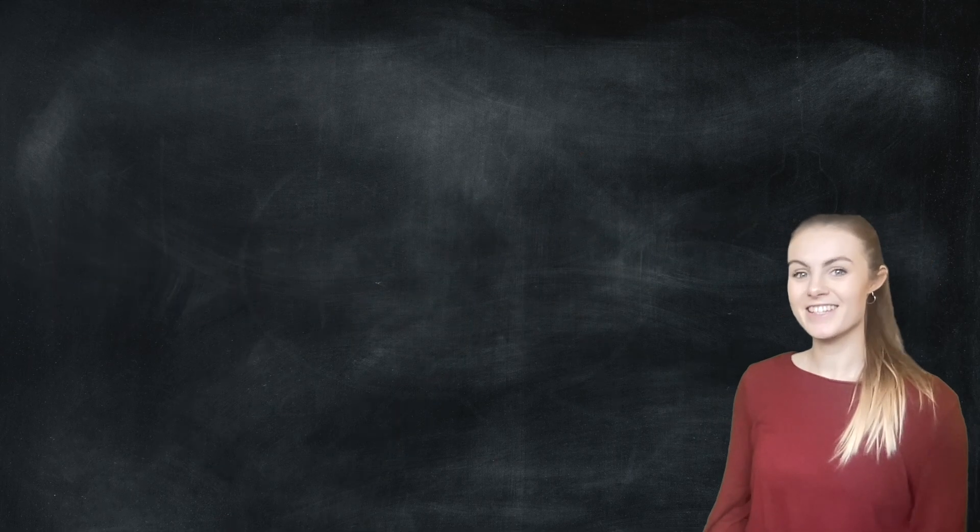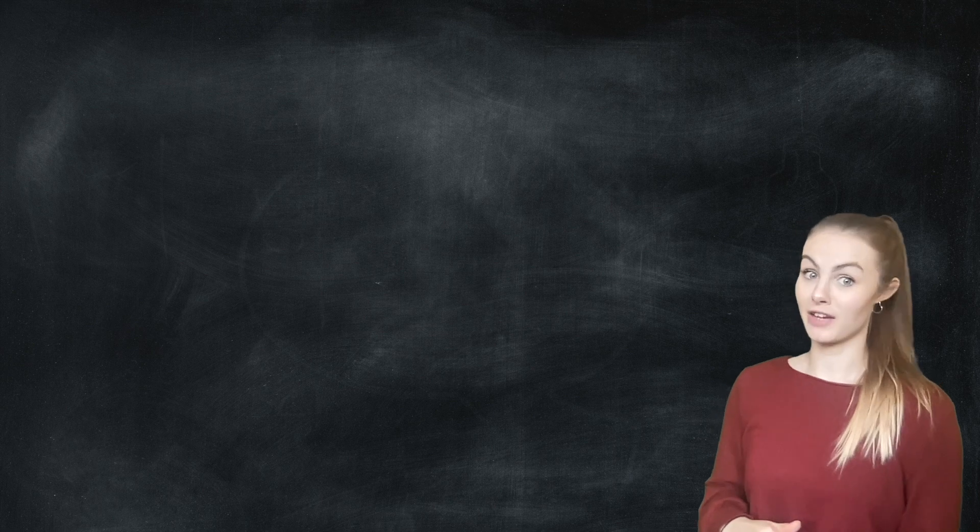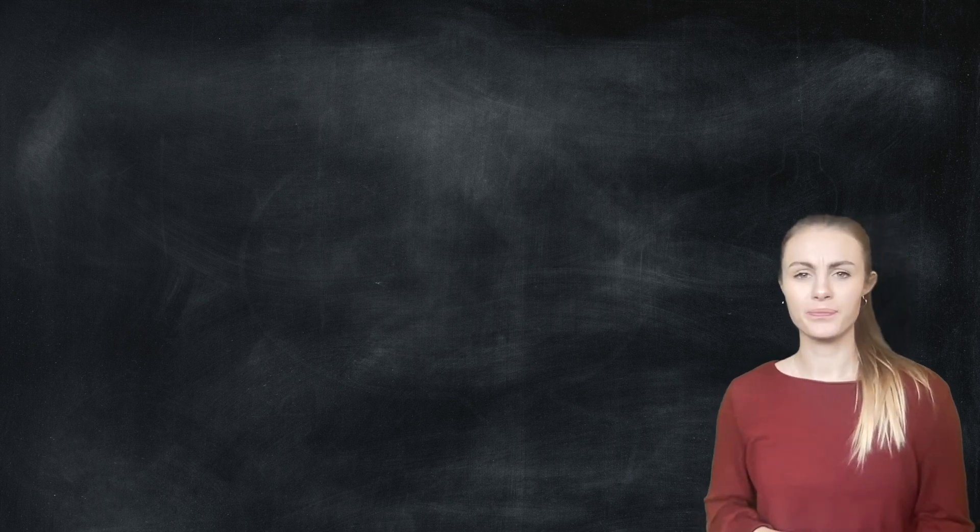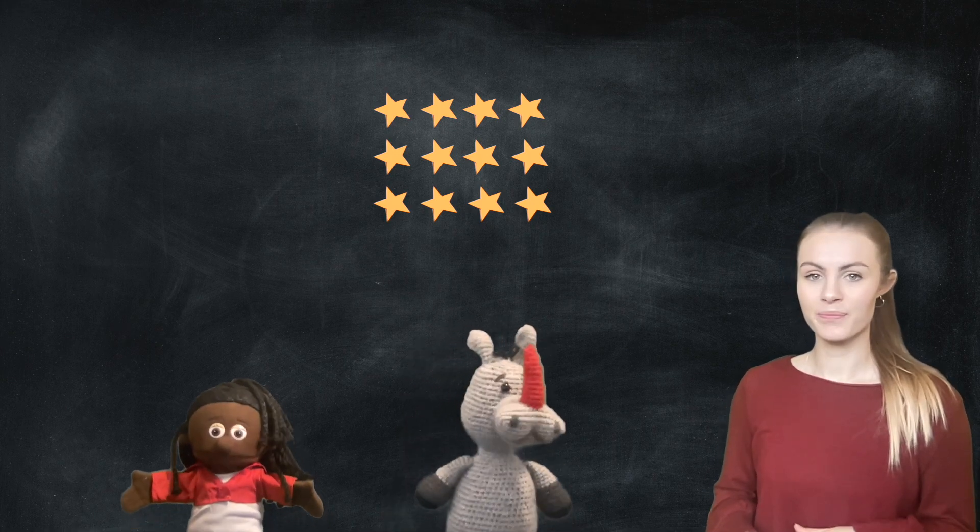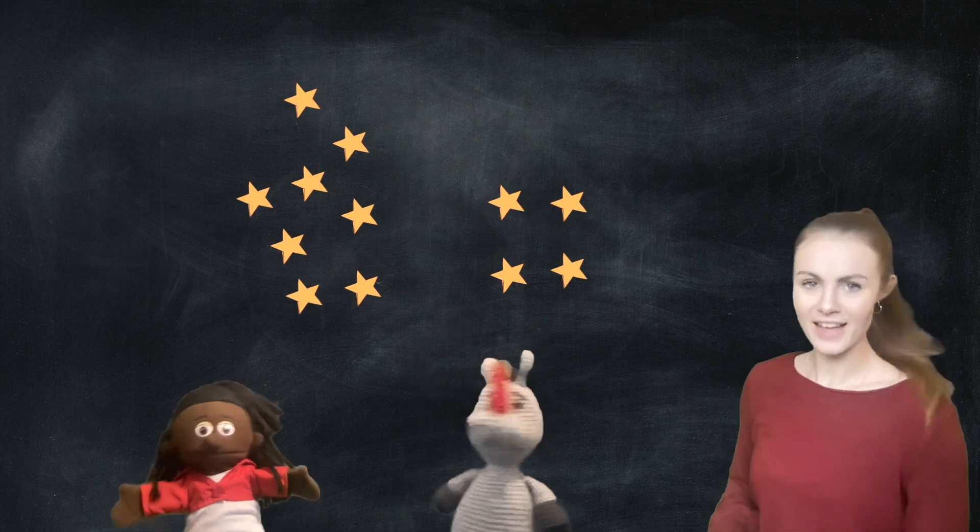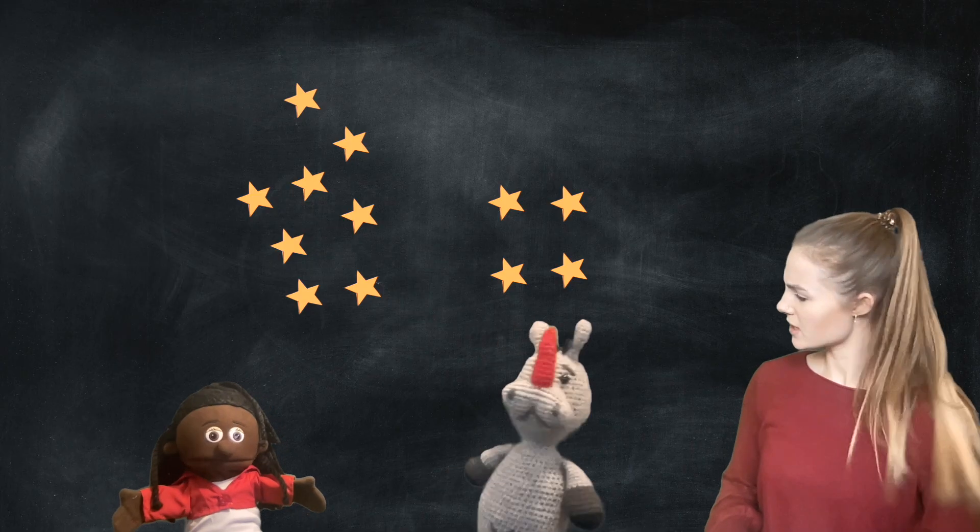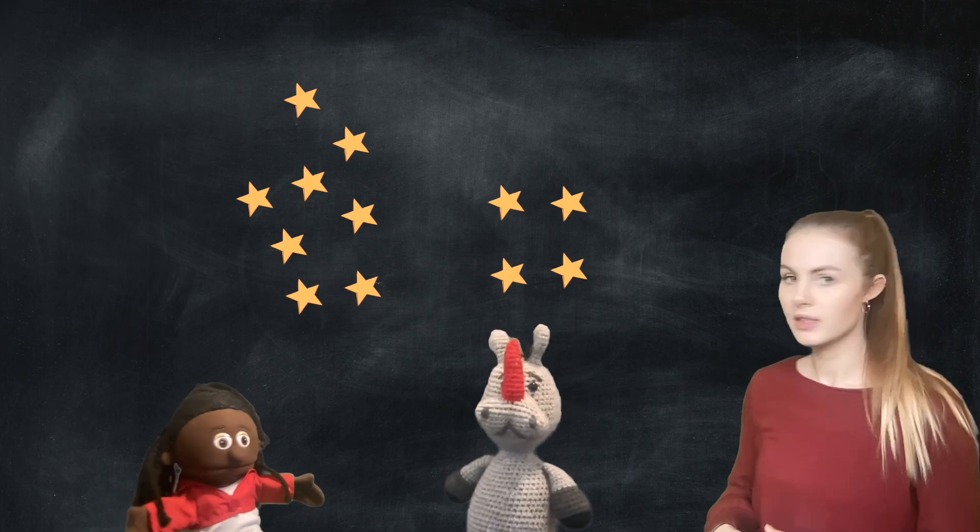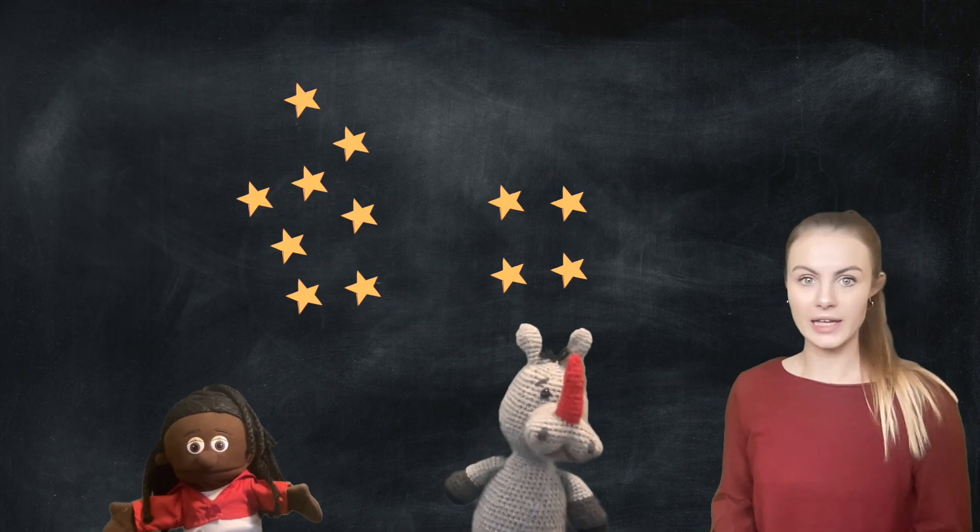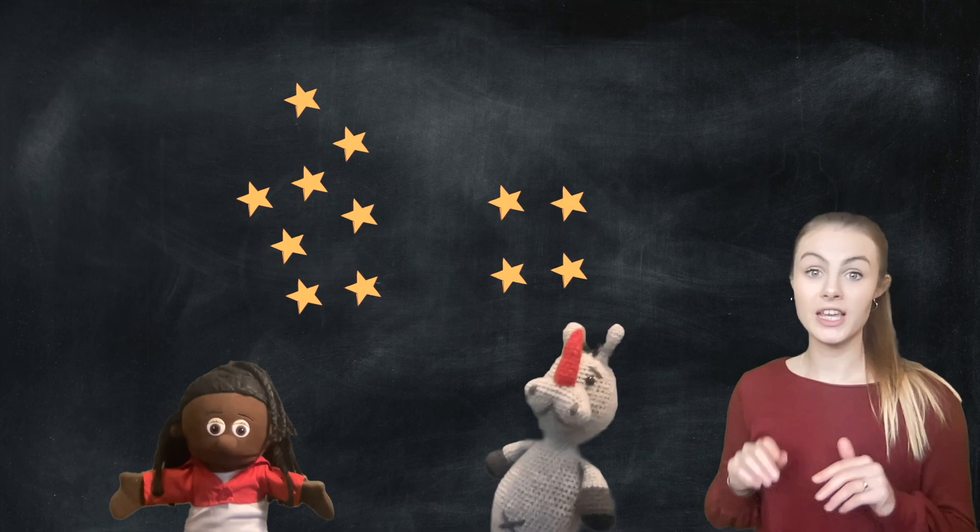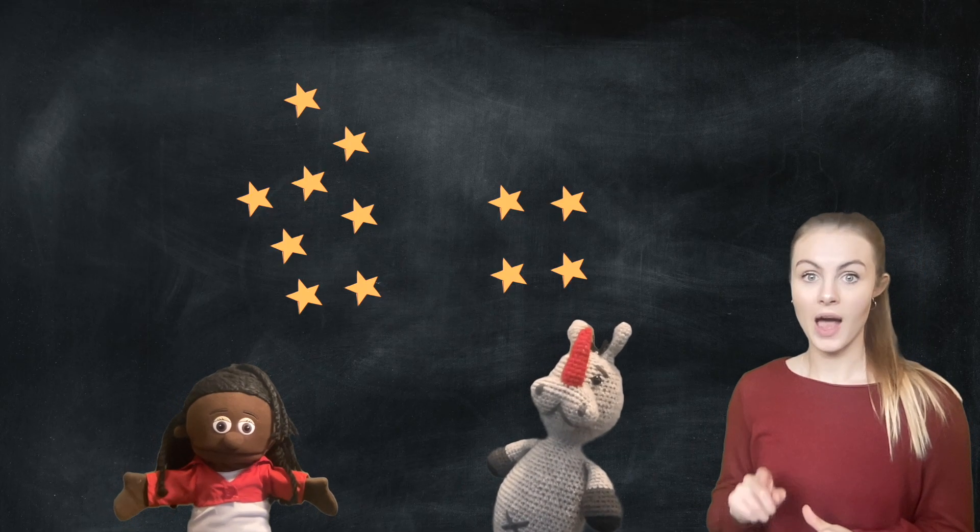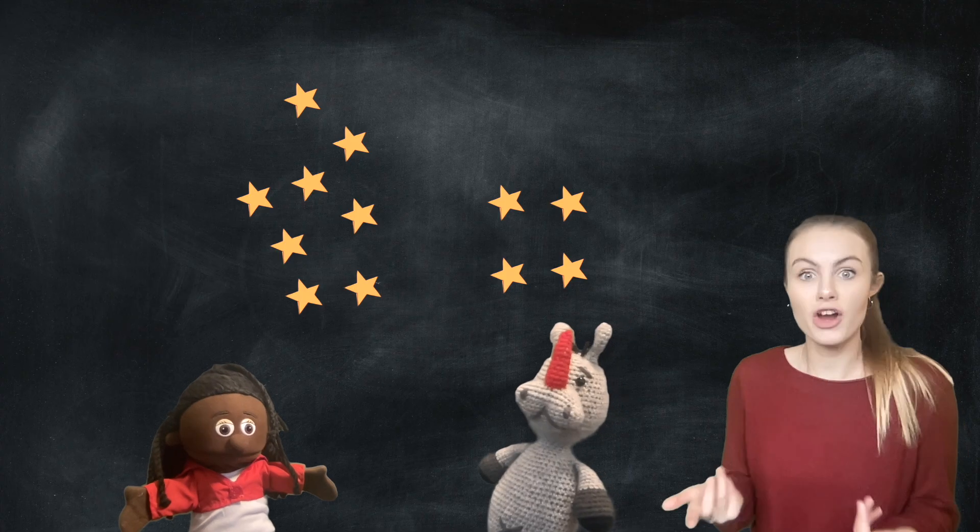Like I said, today we're looking at division by sharing. So let's look at an example. I've got 12 stars and I'm going to share them between Roo and Pig. Okay, done that. What's up, Pig? Roo's got more stars than you. Oh no, I haven't shared them equally. Let's fix this. I'm going to slow right down and I'm going to give each of them a star one at a time until I run out of stars.